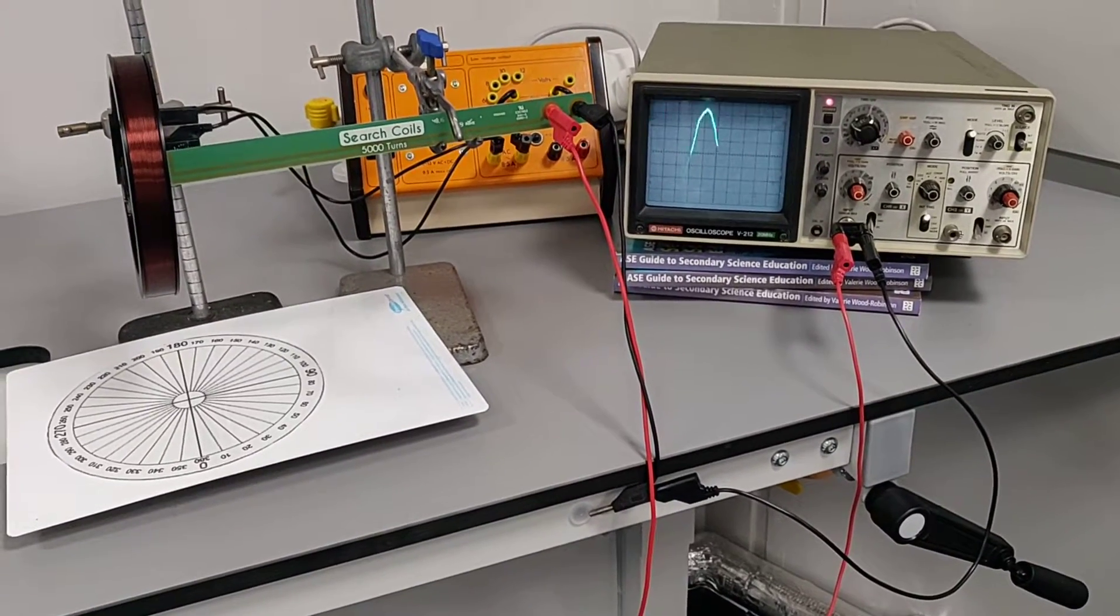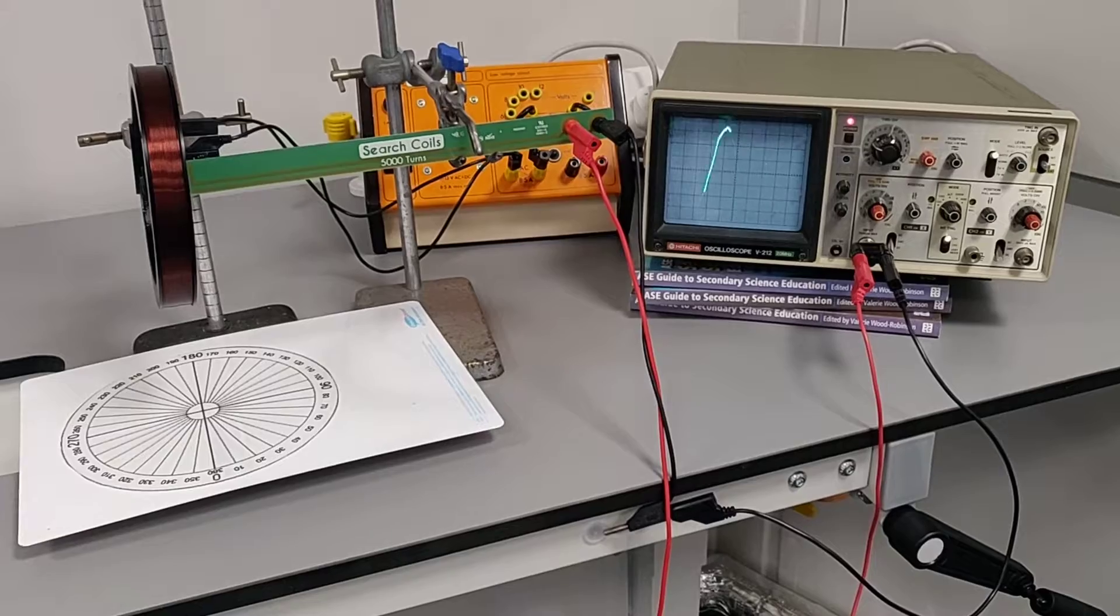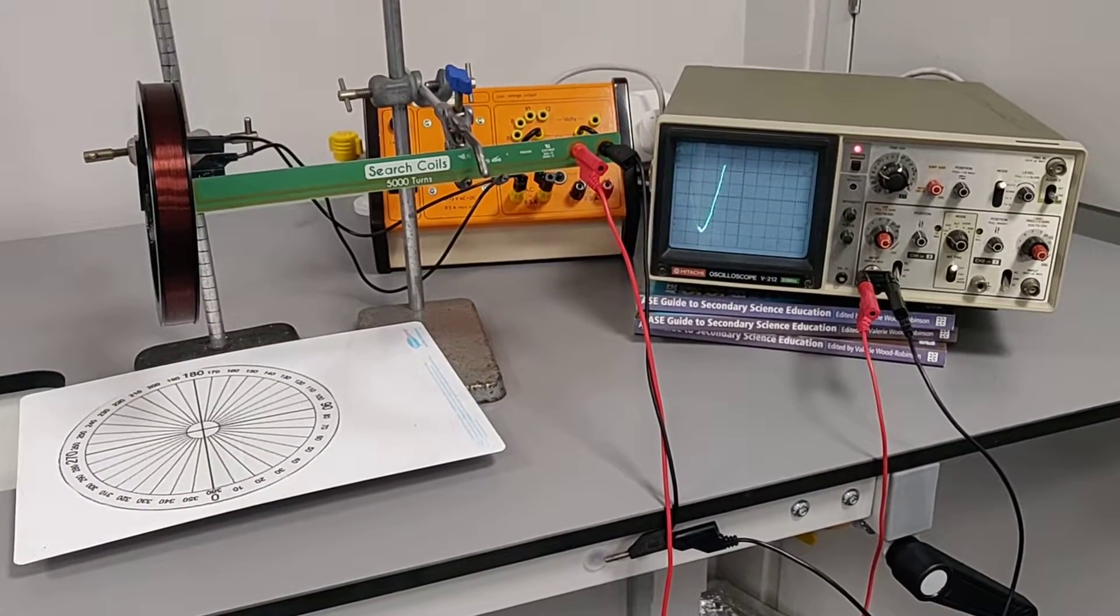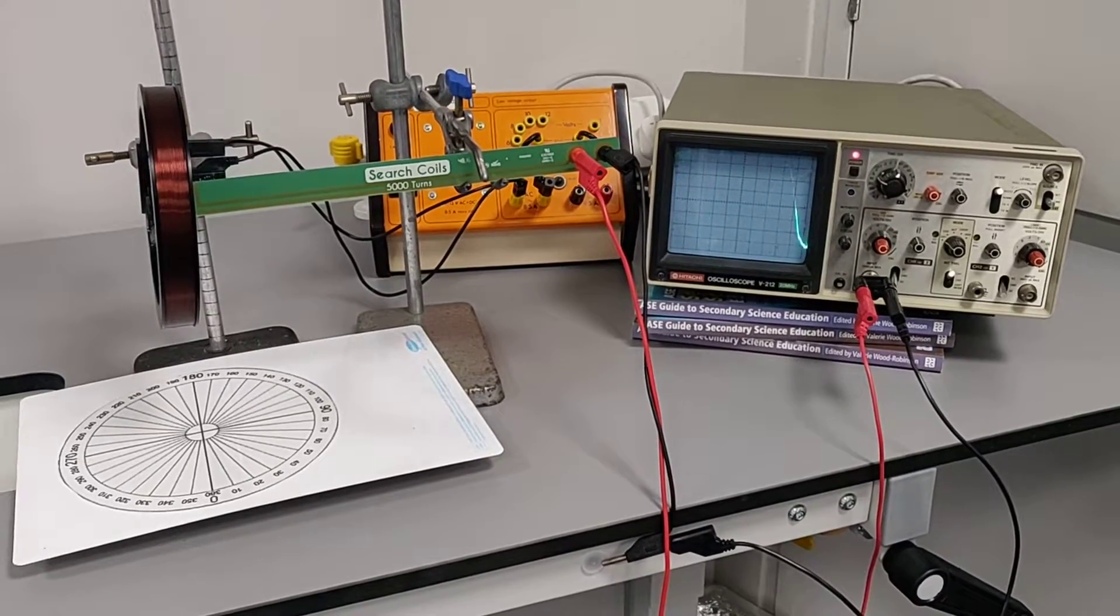So this is the experiment to investigate the effects on the magnetic flux linkage of varying the angle between a search coil and the magnetic field.